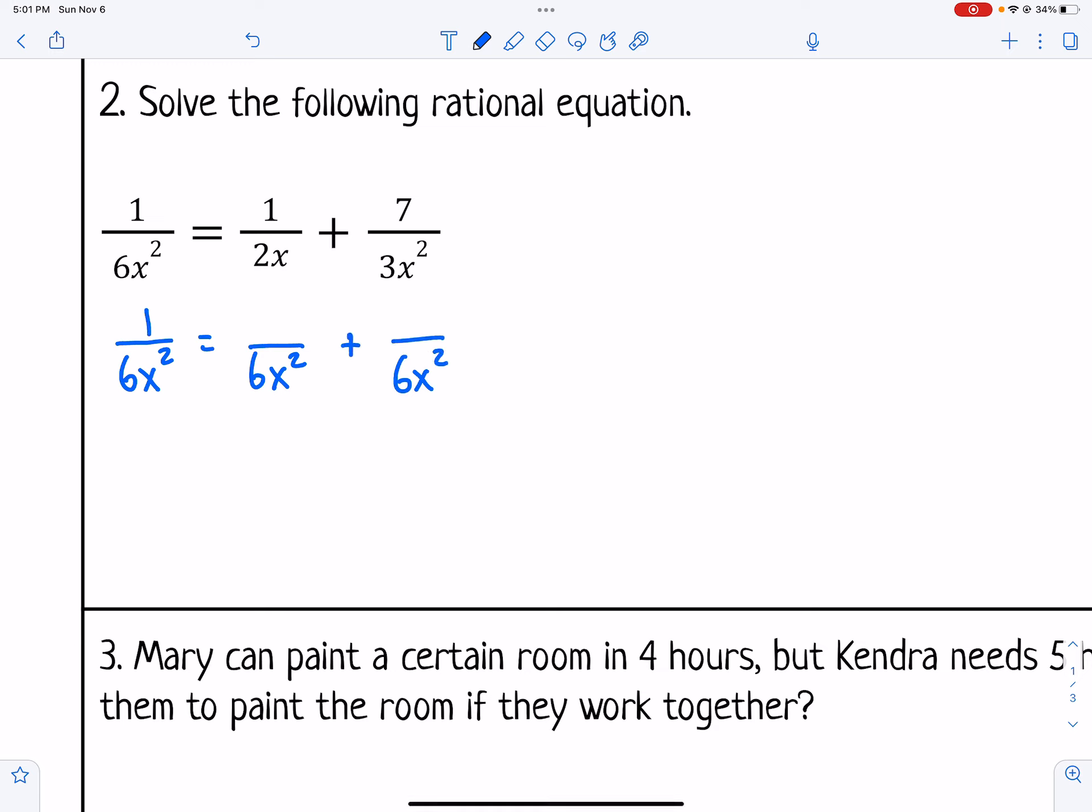So 1 already has 6x squared for the denominator. The second one I have to multiply by 3x to get 6x squared. So I'm going to bring down 1 times 3x is 3x for my new numerator. And then in the last fraction I have to multiply by 2 so that would be 14. Once you get them to all match then you can take them all away and solve what's left.